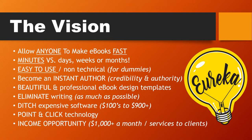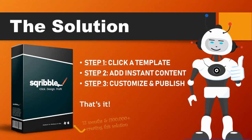You can make $1,000 a month at least by selling services to clients — I'll talk about that in a few minutes. The solution took 12 months and around $100,000 in investment to create. It's called Scribble — click, design and profit — to create e-books with content in minutes, not months. There are really just three easy steps: click a template, add instant content, customize your e-book and publish it.